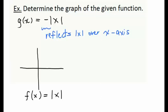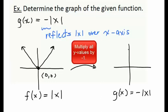Let's begin by plotting the absolute value function. The absolute value function has a minimum at the origin and it opens upwards in a V-shape. To plot g(x) = -|x|, I'm going to plot the origin point and reflect over the x-axis, so now our V is going to be pointed in the downwards direction.